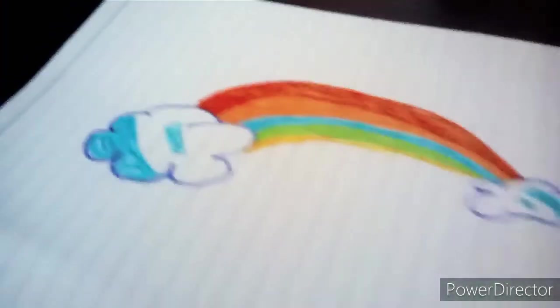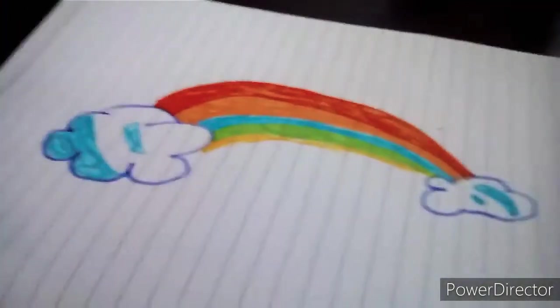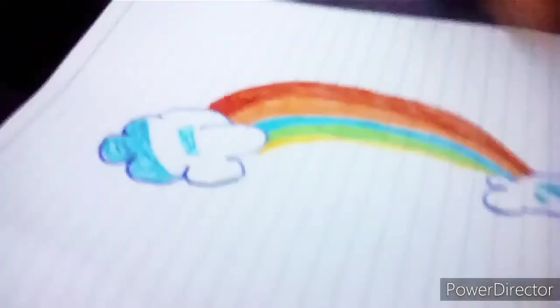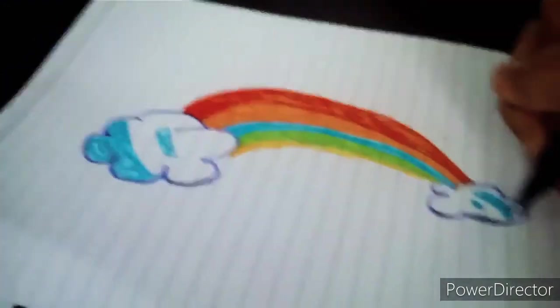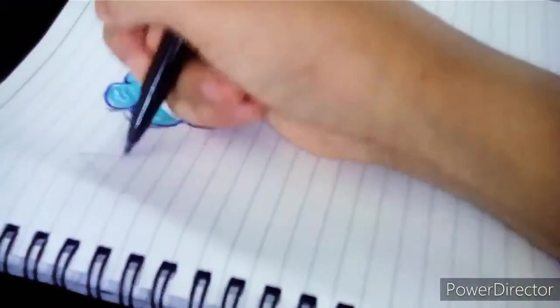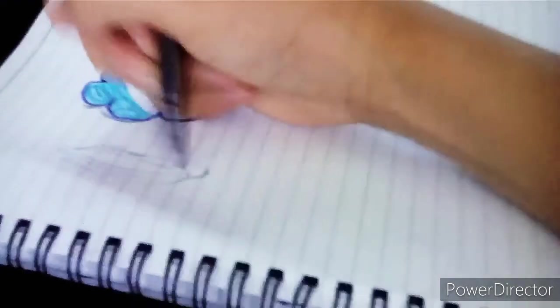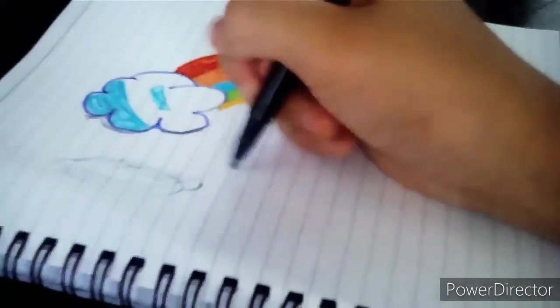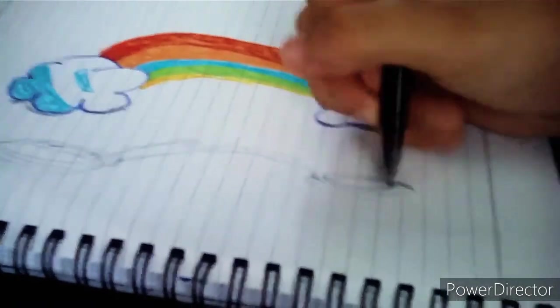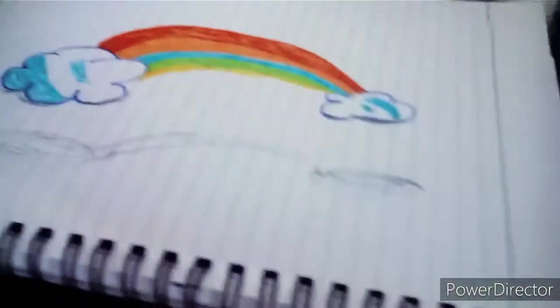Get the black one. Do a little right here, little right here on the bottom of the clouds, and put shadow on the bottom. Just a circle, just like that.